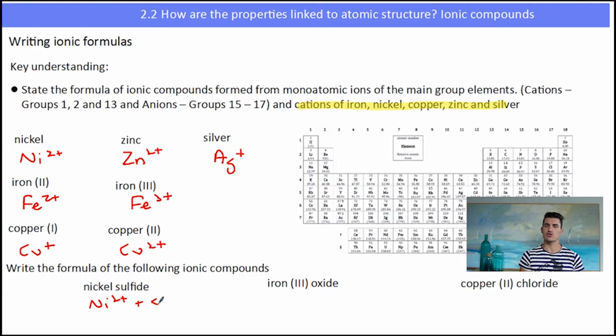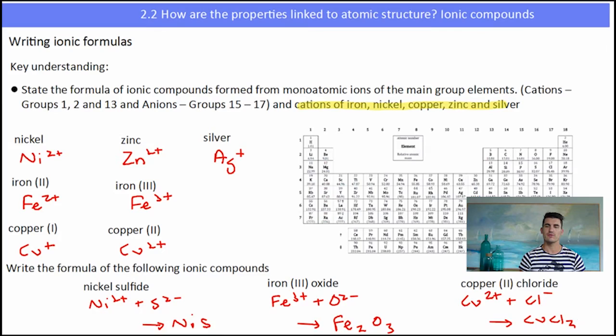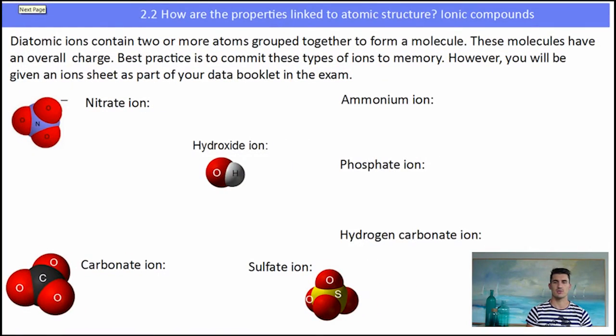So to write the formula for nickel sulfide, nickel is a 2 plus ion and sulfide is a 2 minus ion, so they will cancel each other out nicely to give us NiS. Iron 3 oxide, iron will be 3 plus and oxide will be O2 minus. Now we've got to try and find a common factor here. A simple trick is to swap the charges over, and by the charges I mean we'll have to have two of the irons and three of the oxides, so the formula will be Fe2O3. Copper 2 chloride, the copper will be 2 plus and the chloride is 1 minus, so I need two of the chlorides to balance out the charge CuCl2.